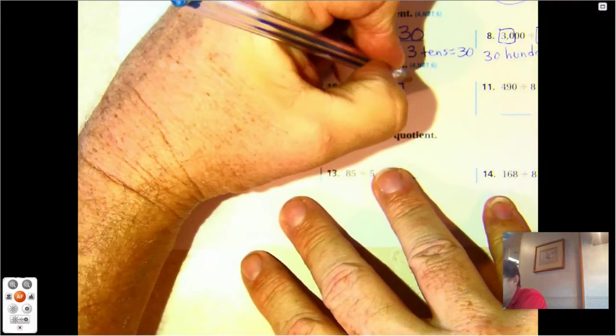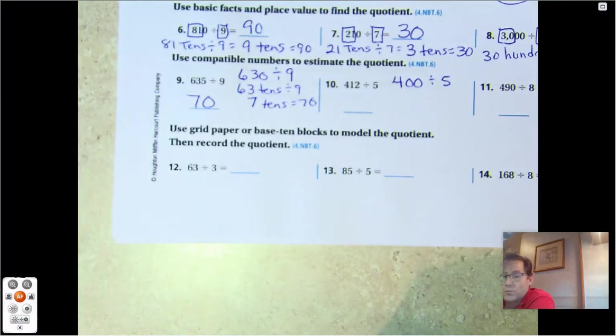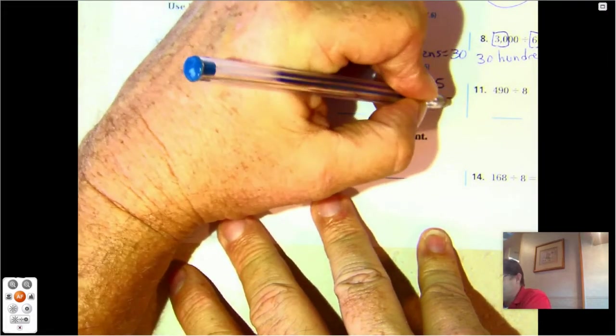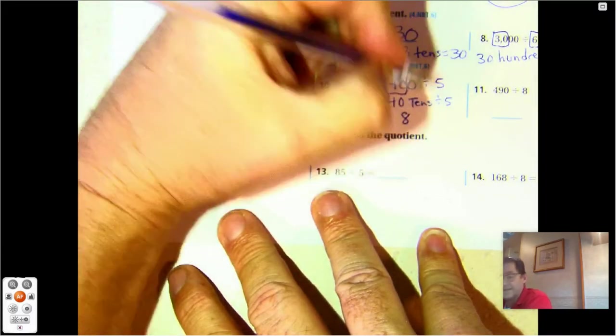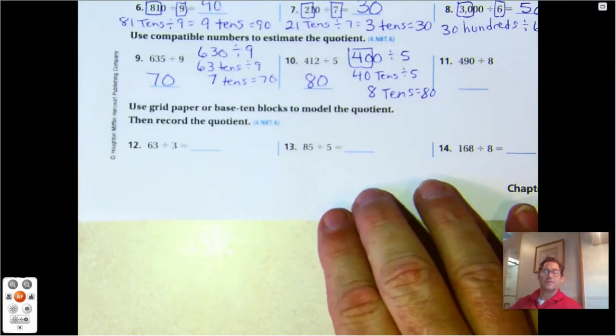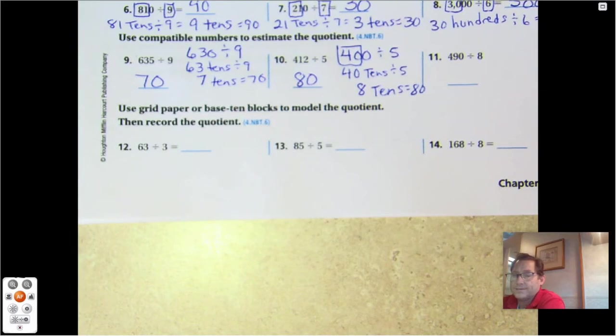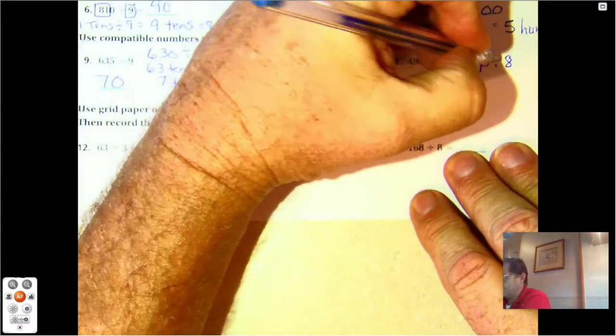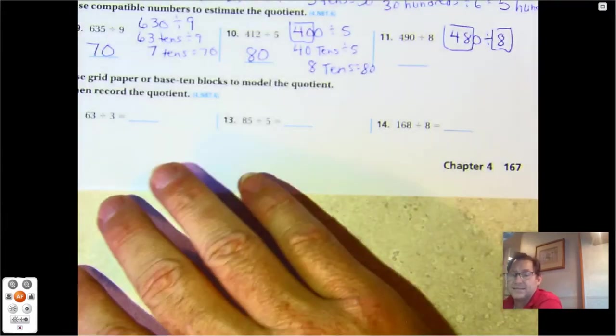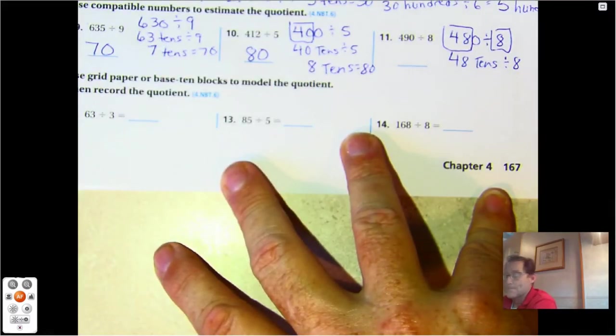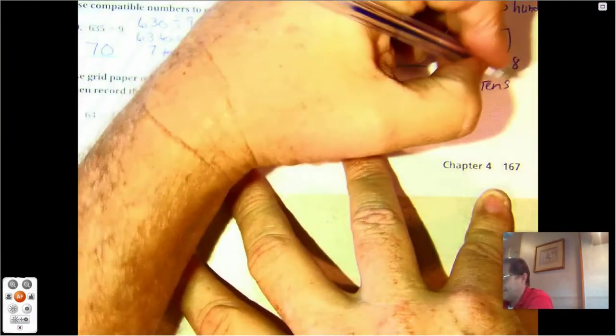412. Well, I know that five times eight is 40. So let's change 412 to 400, and so 40 tens divided by five. 40 divided by five is eight because eight times five is 40, and eight tens is 80. 490 divided by eight. I know that eight times five is 40, but I think I can get closer. Eight times six is 48. So let's change 490 to 480 divided by eight. 48 tens divided by eight: eight times six is 48. Six tens equals 60.